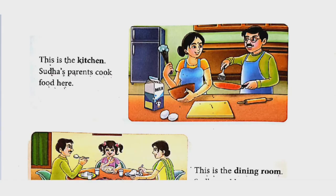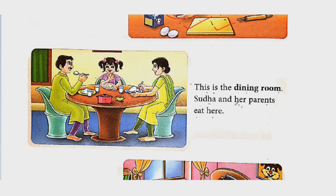This is a kitchen — yahan pe khana banta hai. See the next room: this is the dining room. Dining room mein kya karte hain? Sudha and her parents eat here — yahan pe sab log dining room mein saath mein baith ke khana khaate hain.